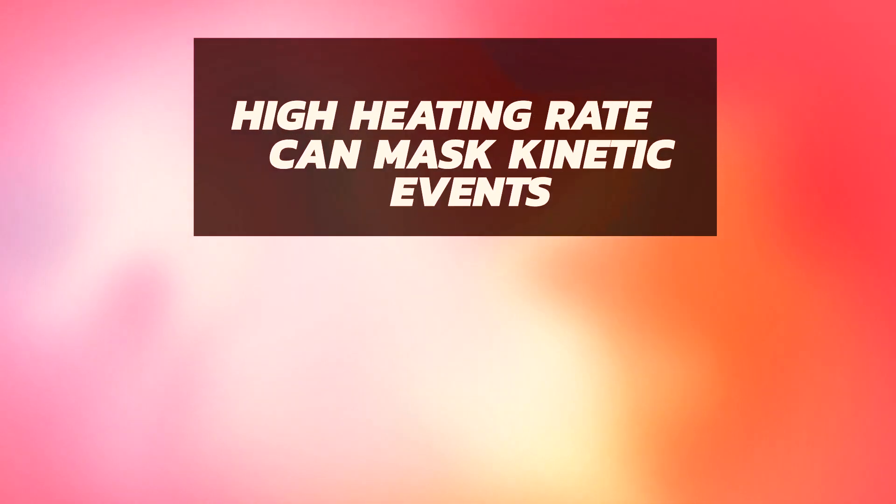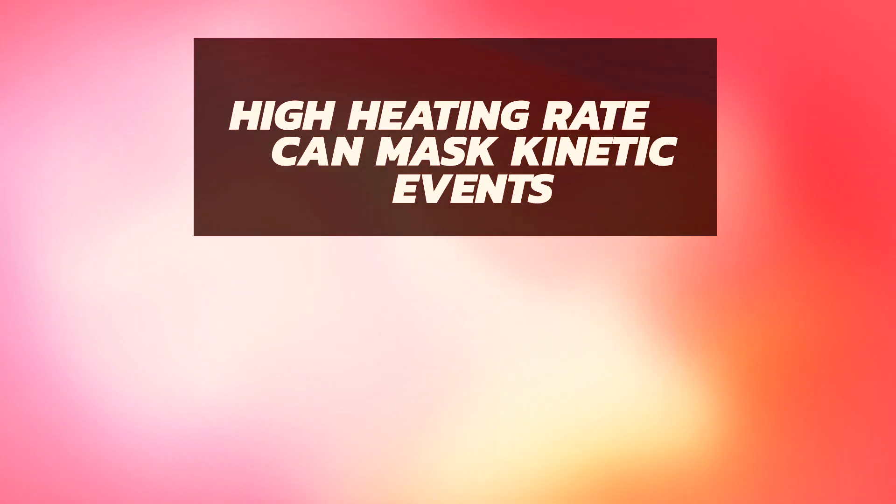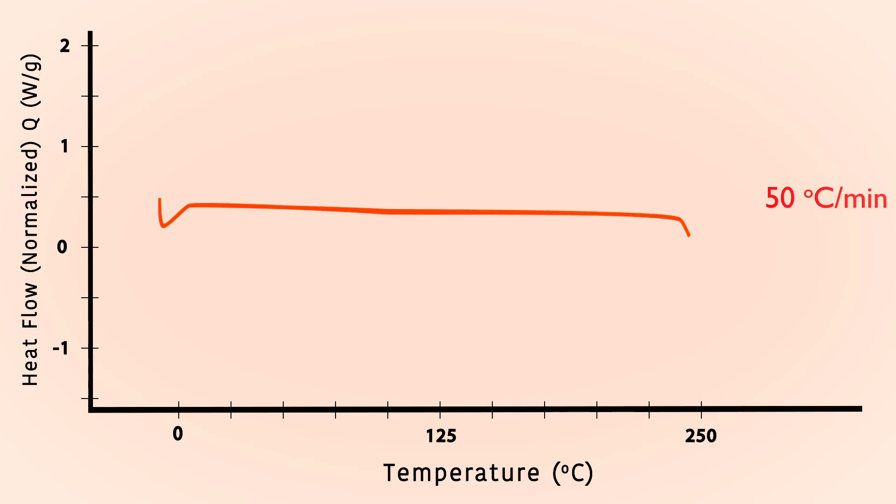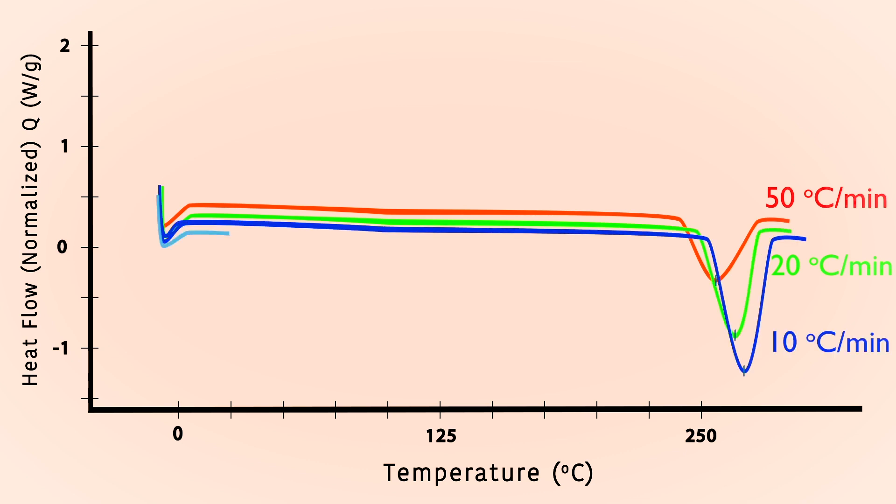The rate at which the sample is heated can affect your testing results. A high heating rate can mask some kinetic effects or create kinetic artifacts, whereas too slow of a heating rate can prolong thermal events. In this example, we see a PET sample heated at different rates. The melting points for lower heating rates shift to a higher value.